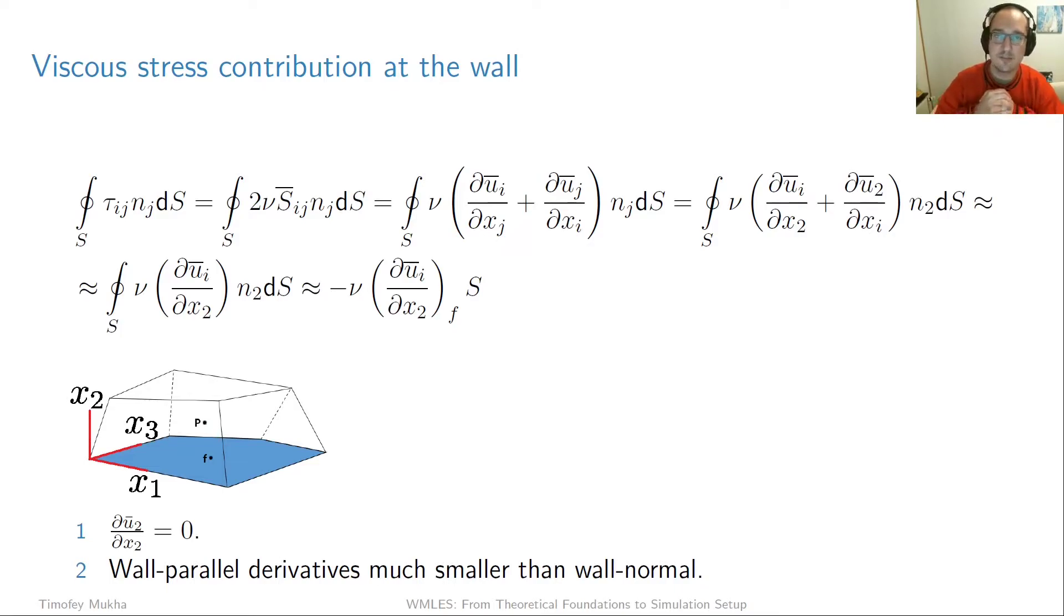One thing one should also note is that actually du2 dx2 is strictly zero and that's analytical. Basically if you look at the velocity profile of a vertical velocity profile near the wall you'll see that it converges to a straight line near the wall. So its gradient is actually zero. So that means that only two components of this term is actually going to be nonzero corresponding to i equal to 1 and i equal to 3.